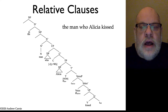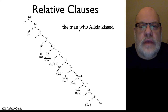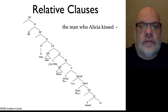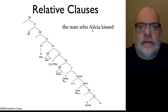The most obvious kind of relative clause that involves WH movement is one like 'the man who Alicia kissed,' where 'kiss' takes an object, which is effectively the 'who' here, but it's also the man — Alicia kissed the man.